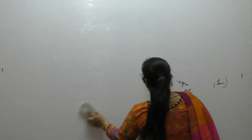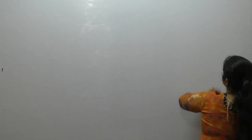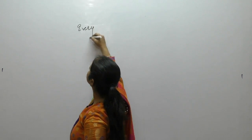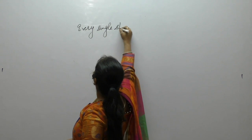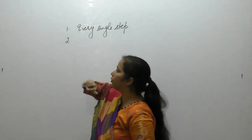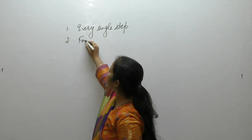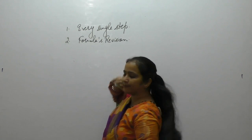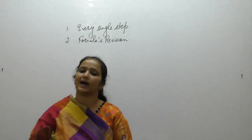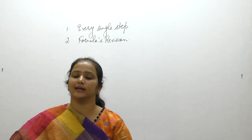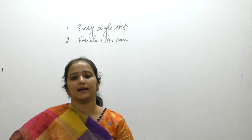Many students say their paper went very well, but they didn't get good marks. Why? Because every single step has marks in mathematics — you must write every step. No step should be skipped. Number two: every day you must revise formulas. Formula revision is a must, both every day and before the exam. If a question comes in the paper but you don't remember its formula, how can you solve it? So formulas are a must.